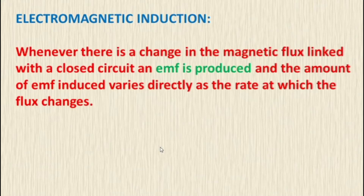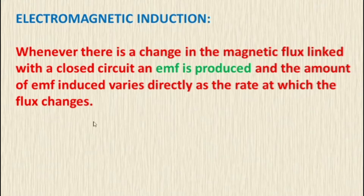Whenever there is a change in the magnetic flux linked with a closed circuit, an EMF is produced. The amount of EMF induced varies directly as the rate at which the flux changes. Magnetic flux is the measure of the strength of the magnetic field lines passing through a given area.